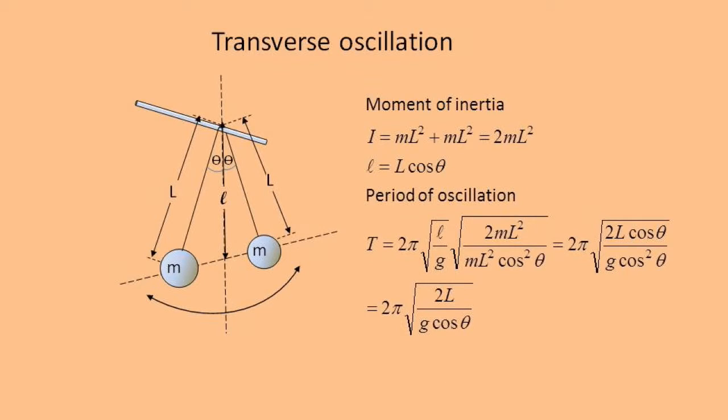Now we will calculate the period for the two cases of oscillation that we saw for our two-mass pendulum earlier, to explain why the period is different in each direction. Firstly, for swinging around the axis, or transverse oscillation, the moment of inertia is just twice that for a simple pendulum. And we find that the period is 2π√(2l/(g cos θ)).